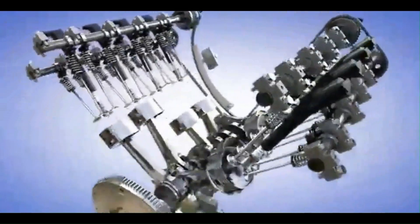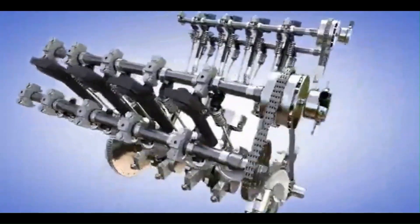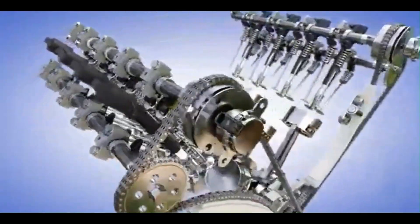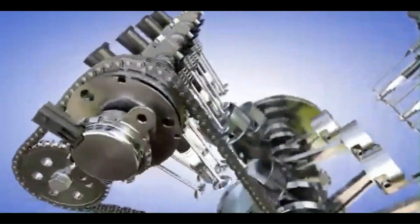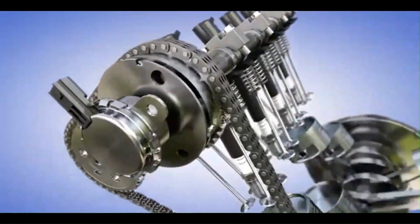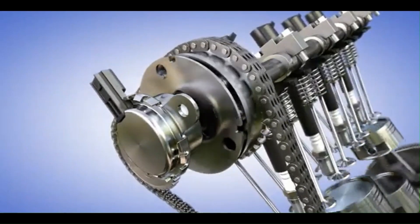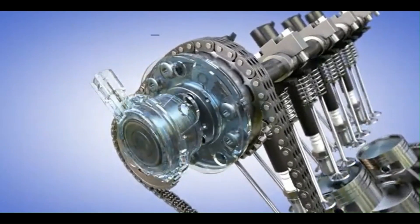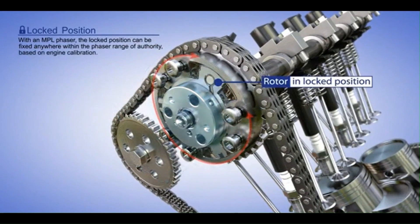Camshaft and Timing Mechanism — Mechanical Losses: The camshaft is driven by the engine's crankshaft using gears, chains, or belts. These mechanisms require energy to operate, and energy is lost through friction in gears or chains, where the movement creates resistance leading to power loss.